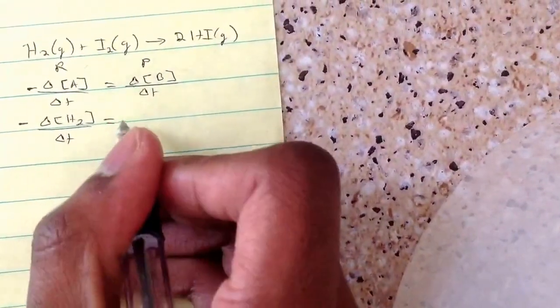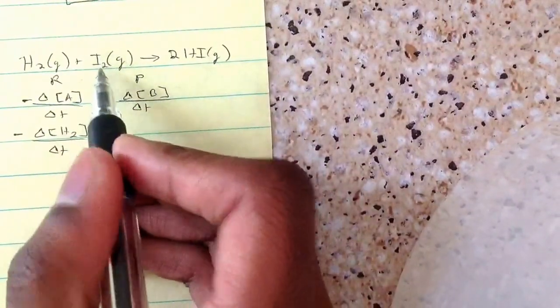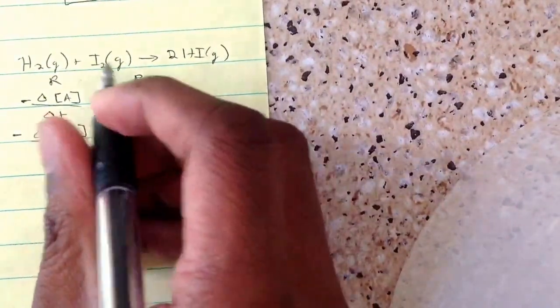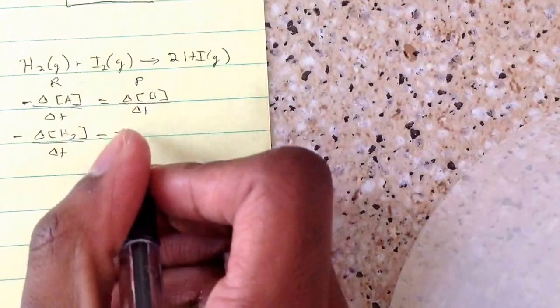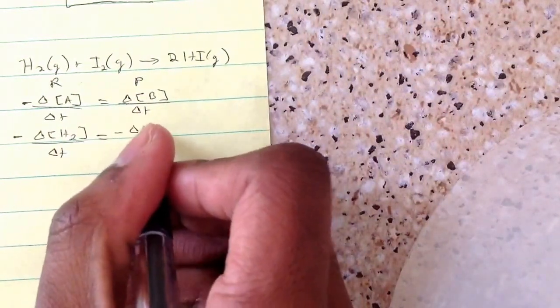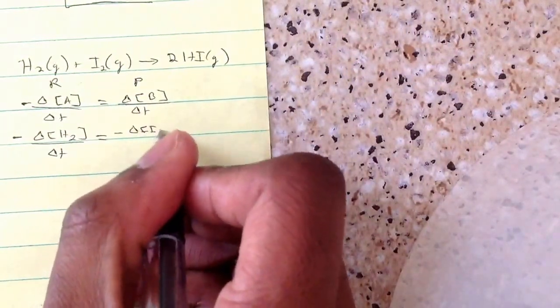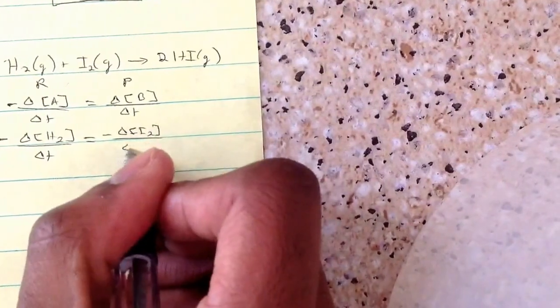And then this equals the other reactant, which is also going to be negative because it's a reactant, and it's going to be change of I2 over change of time.